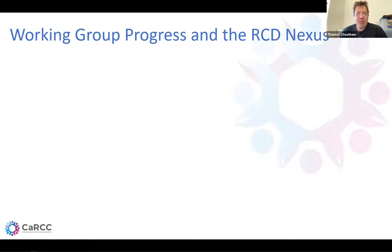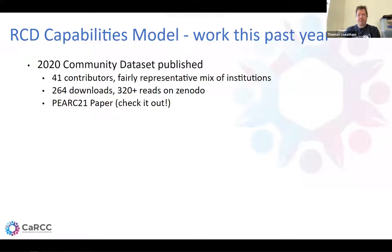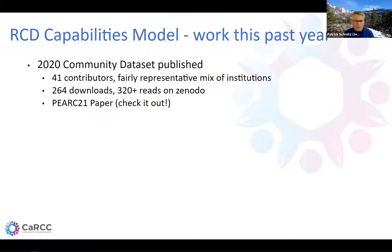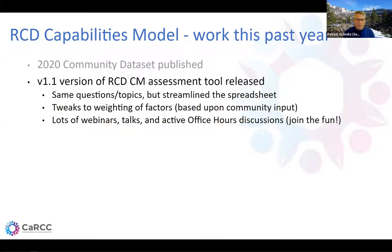Now we're going to talk about the various working groups in progress and introduce the Research Computing and Data Nexus. Starting with the capabilities model — we had a lot done this past year. We closed the 2020 community dataset and published that report with 41 contributors, a pretty representative mix of institutions. That report has been downloaded hundreds of times. The full report is on Zenodo, and we produced a PERC 21 paper — the award-winning version.